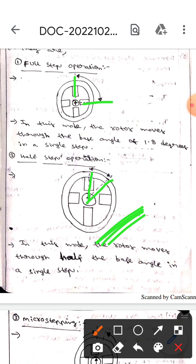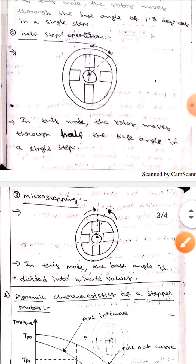In half step operation, if the rotor is like this it will rotate to this position. In full step operation, if the rotor is like this, then it will rotate only up to this angle. The next one is...